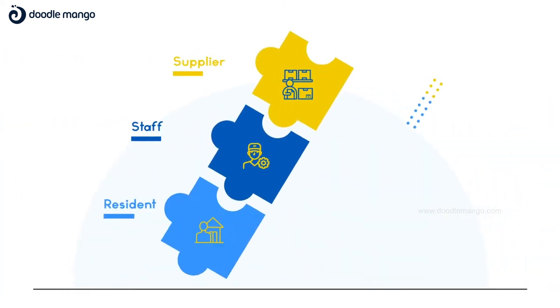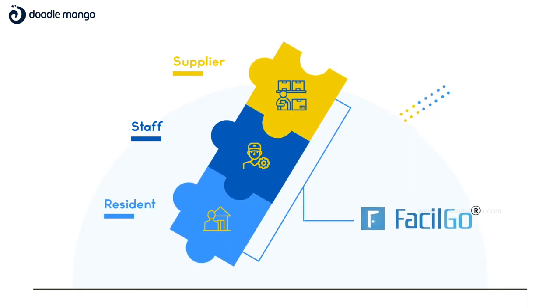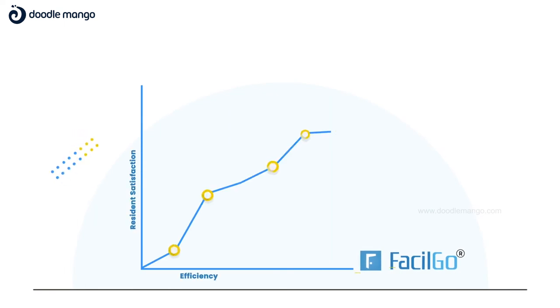Using Fasilgo, you can collaborate with your suppliers, staff, and residents to make better informed decisions, resulting in higher efficiency and improved results.